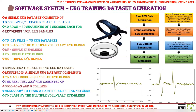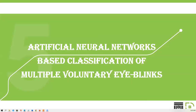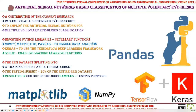The resulting CSV file consisted of 3,000 rows and 8 columns necessary to train an artificial neural network to classify multiple voluntary eye blinks. Another contribution of the current research is implementing a customized Python script using the following libraries: NumPy, Matplotlib, Pandas, Keras, TensorFlow Deep Learning Framework, and Scikit-learn.